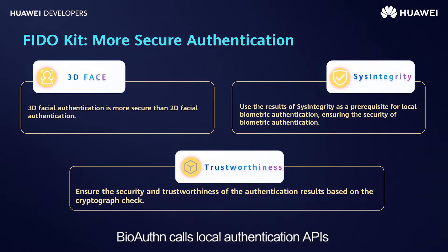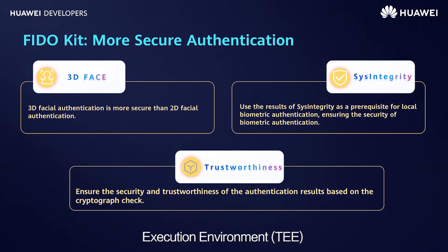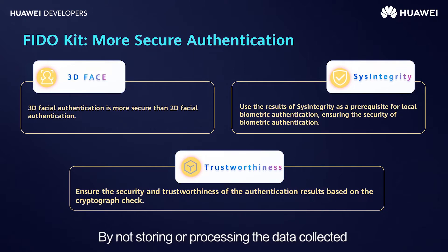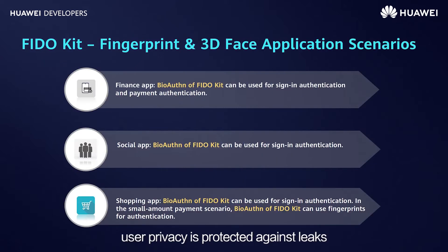BioAuthn uses local authentication APIs of Android and EMUI. The API stores collected fingerprints and faces in the Trusted Execution Environment, TEE, on the local device, where it also compares biometric features. By not storing or processing the data collected on the cloud, user privacy is protected against leaks.